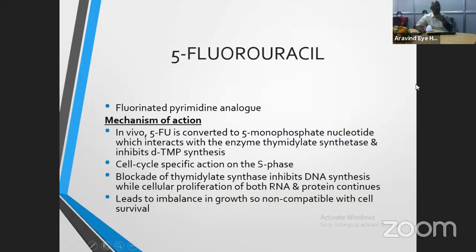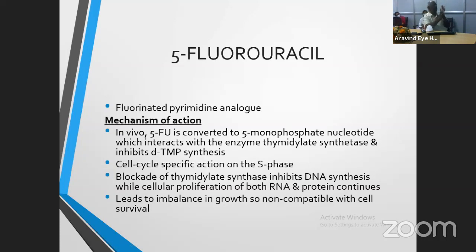Coming to anti-metabolites — many have been tried in anti-glaucoma surgery, including 5-fluorouracil and mitomycin. Only two were found to be more useful: 5-fluorouracil and mitomycin C. After long-term use of 5-FU, the complication rate and side effects were found to be very high, so gradually mitomycin replaced it. In our hospitals also, we rarely use 5-FU; most of the time we use mitomycin only. But we should know about 5-FU as well.